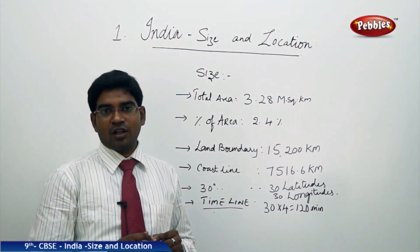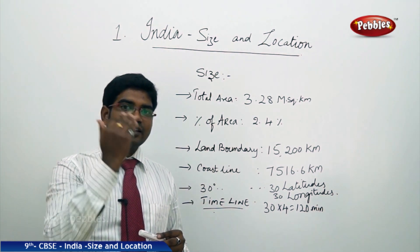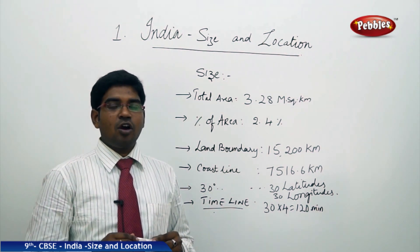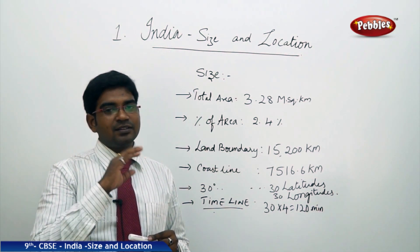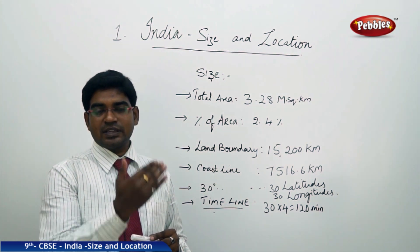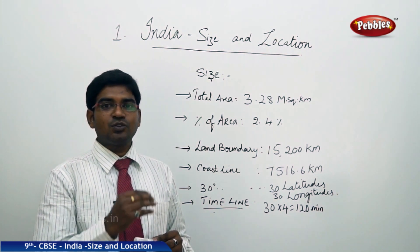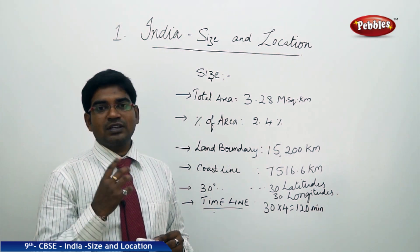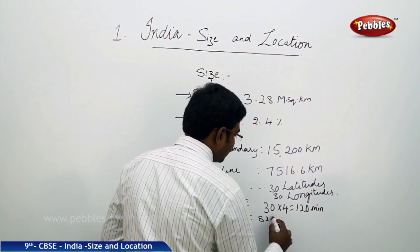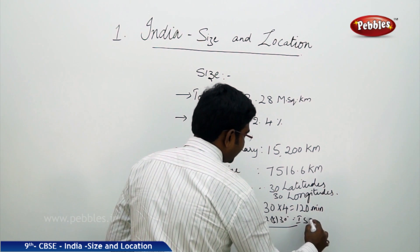If the Arunachal Pradesh longitude were used as the base, people in Gujarat would be missing 2 hours. To avoid this confusion, the exact middle longitude has been taken as India's standard meridian. Though there is still some time difference of 15 longitudes on either side, the difference is much less than 2 hours. That is why, to maintain a standard time across the country, the meridian is fixed as 82 degrees 30 minutes as the Indian Standard Meridian.